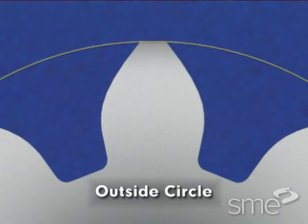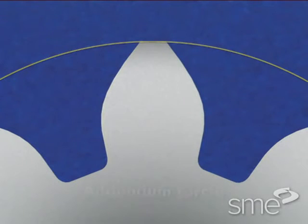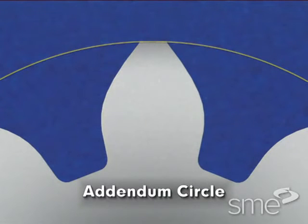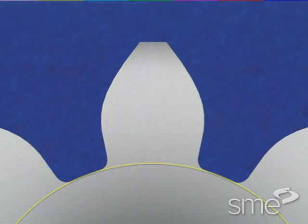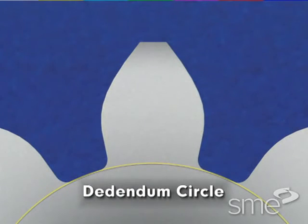The outside circle is the outside diameter of the gear and is also known as the addendum circle. The root circle is the gears root diameter and is tangent to the bottom of the gear teeth. The root circle is also known as the dedendum circle.